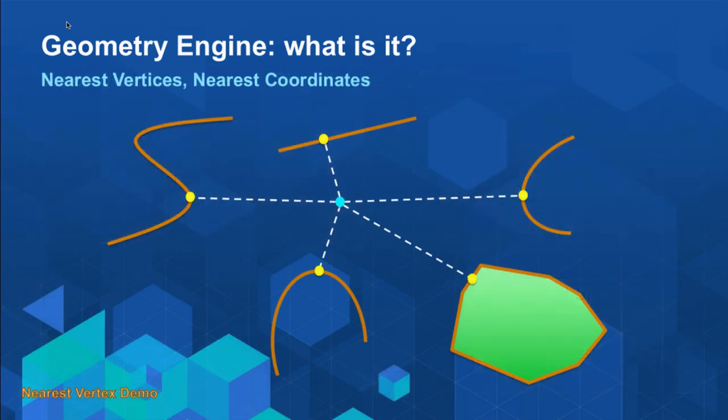In editing workflows, users are used to things like snapping. You can use the nearest vertices and nearest coordinates functions to snap the location of the mouse cursor to the edge of a geometry. Vertices will snap to the nearest vertices, and nearest coordinate will go to some other place along the line or path.